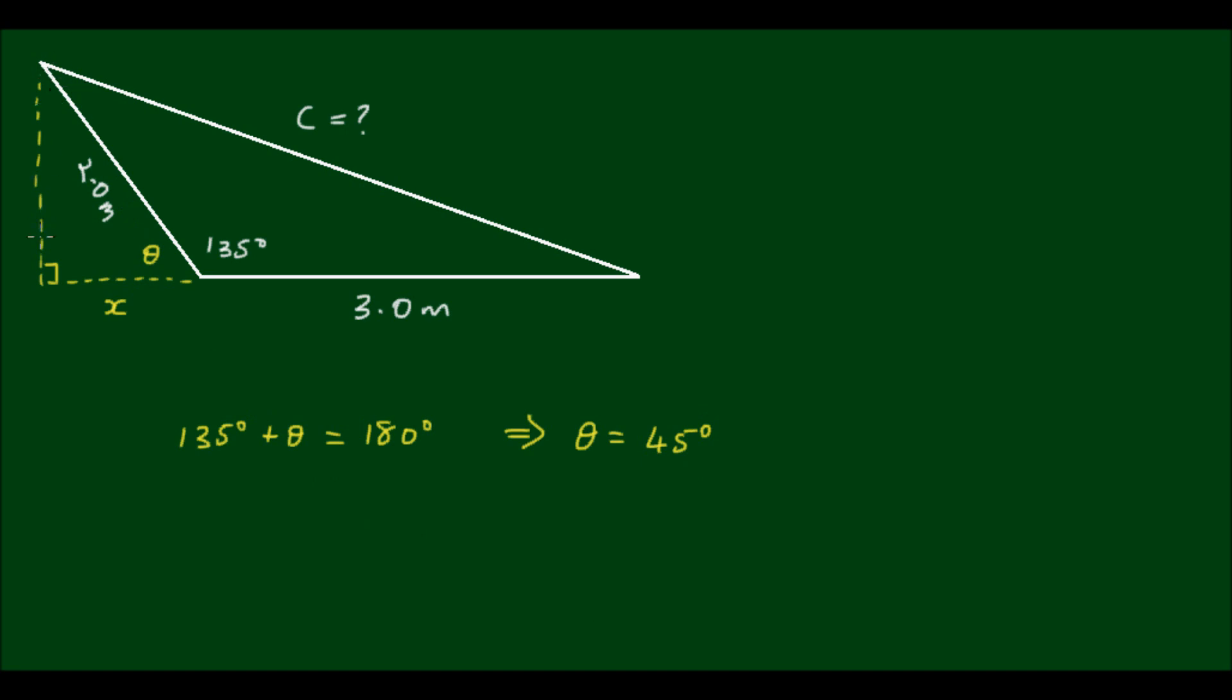Now for the smaller triangle, I know that the hypotenuse is 2 meters, I have an angle of 45 degrees, and an unknown side x. Since it's a right-angle triangle, I can use cos θ equals the adjacent side divided by the hypotenuse. The unknown side x is adjacent to the angle, and the hypotenuse is 2 meters.